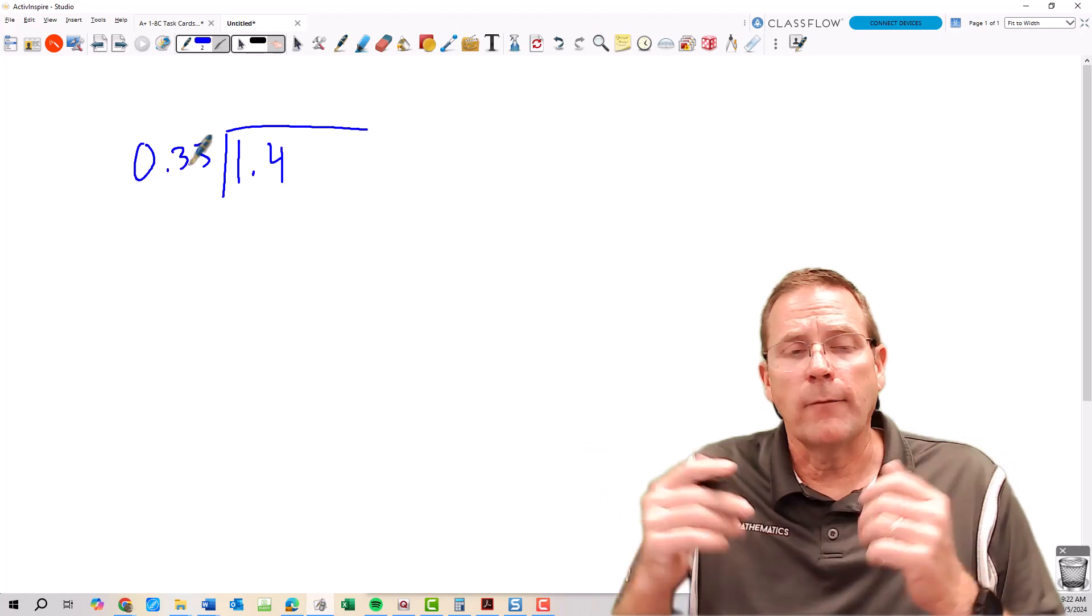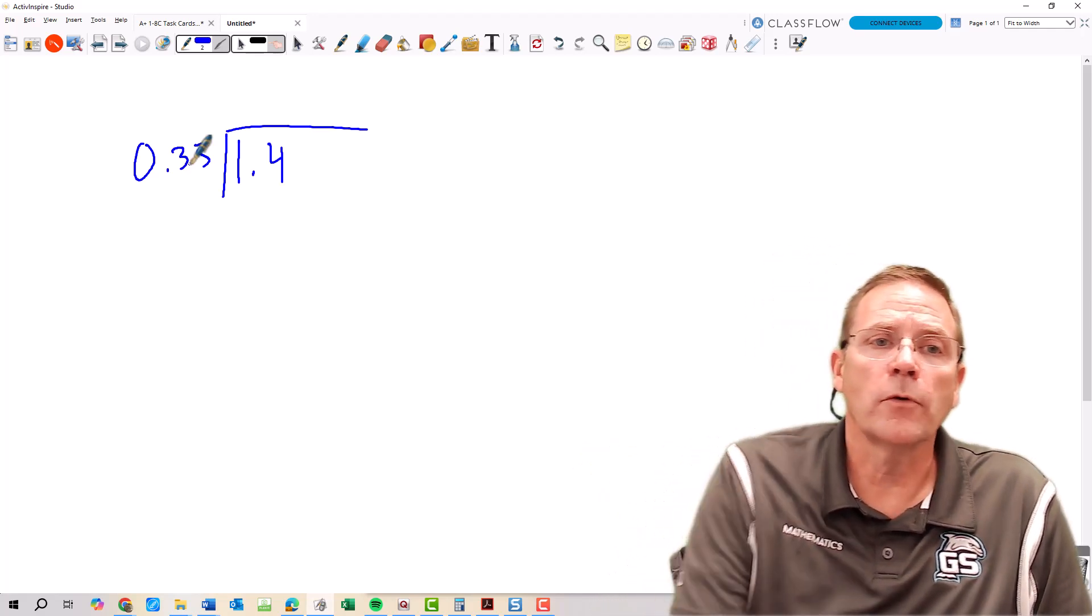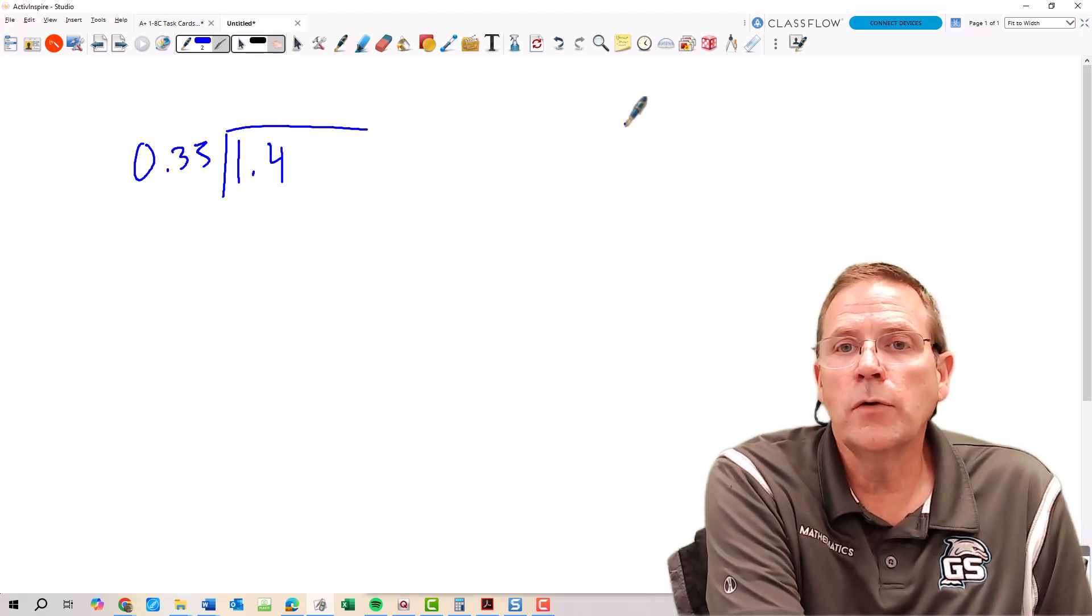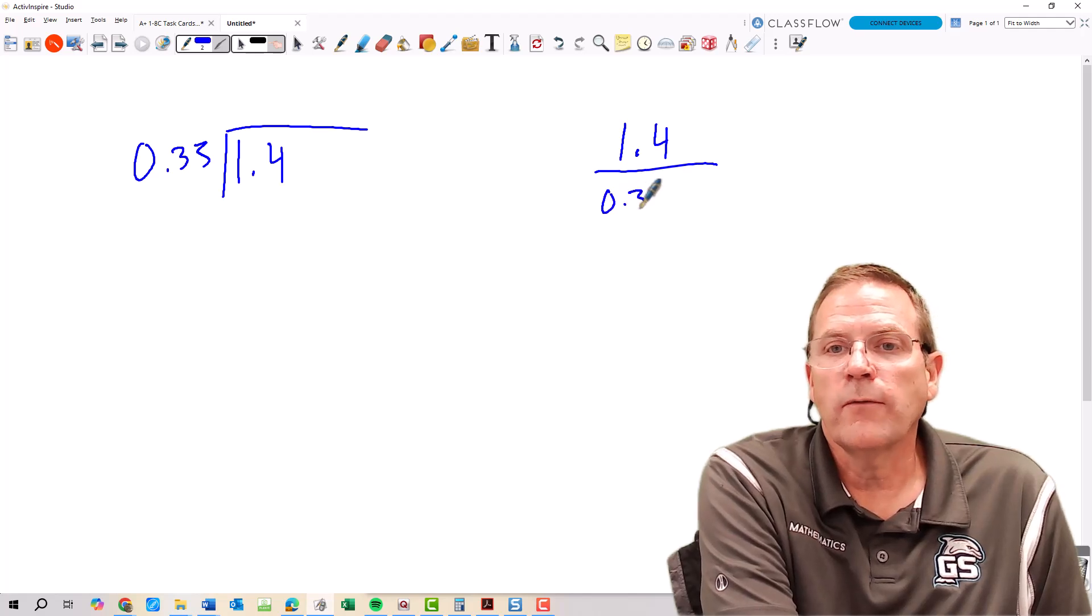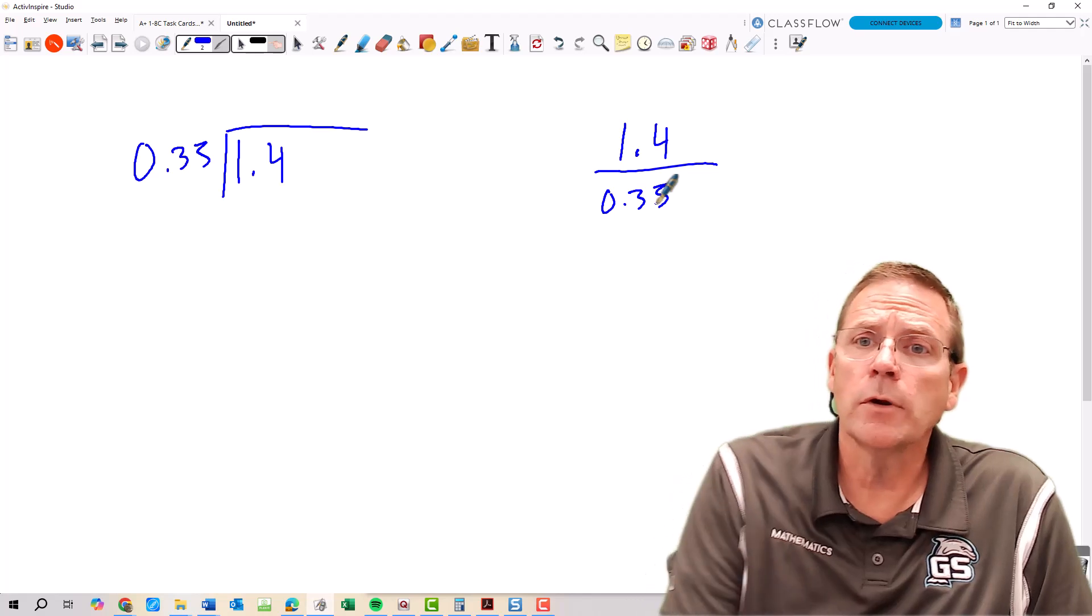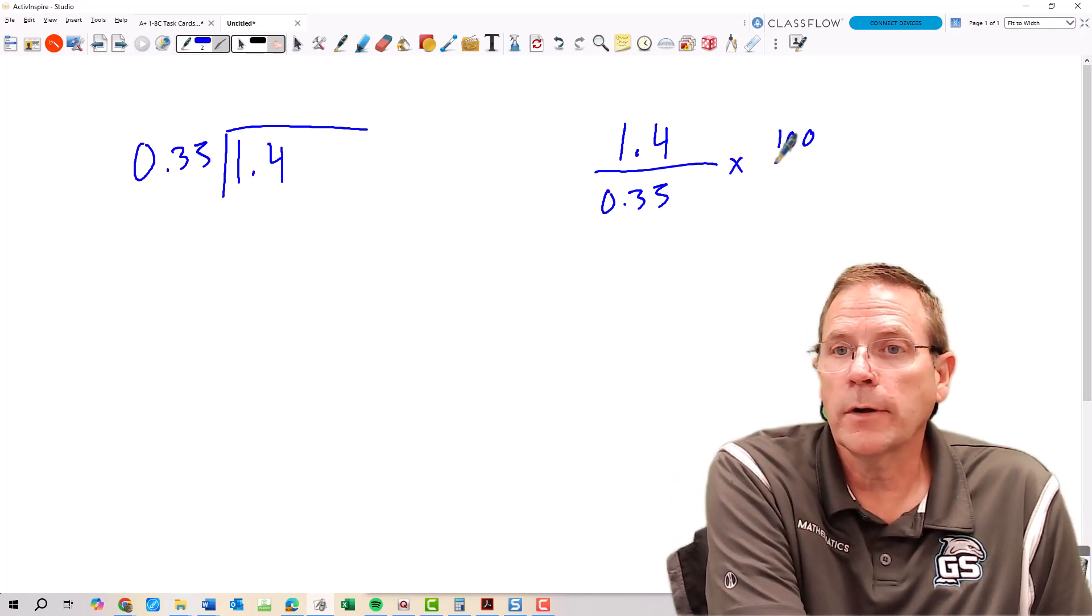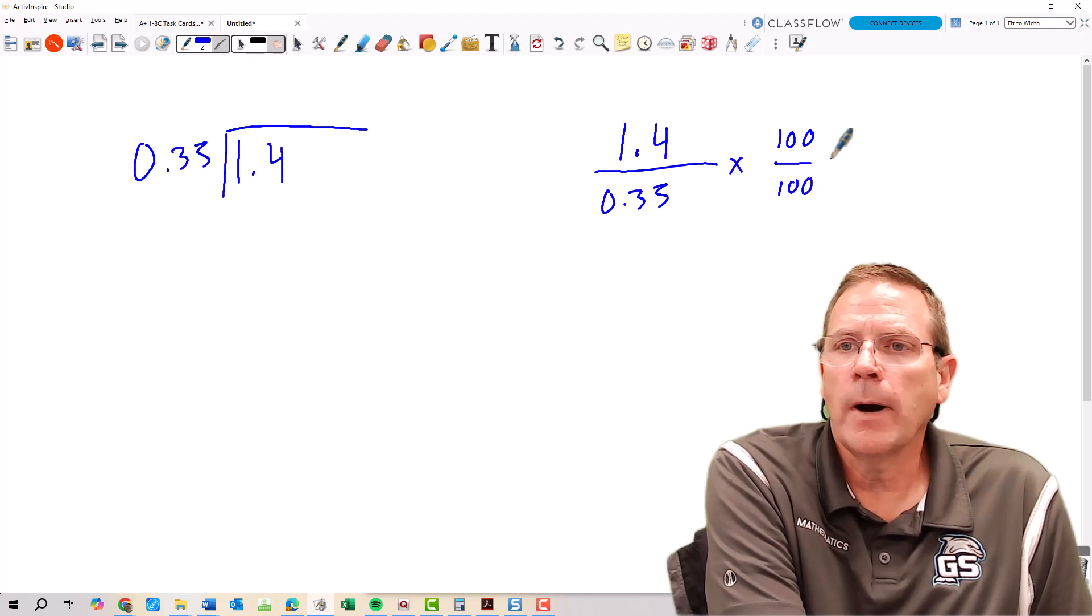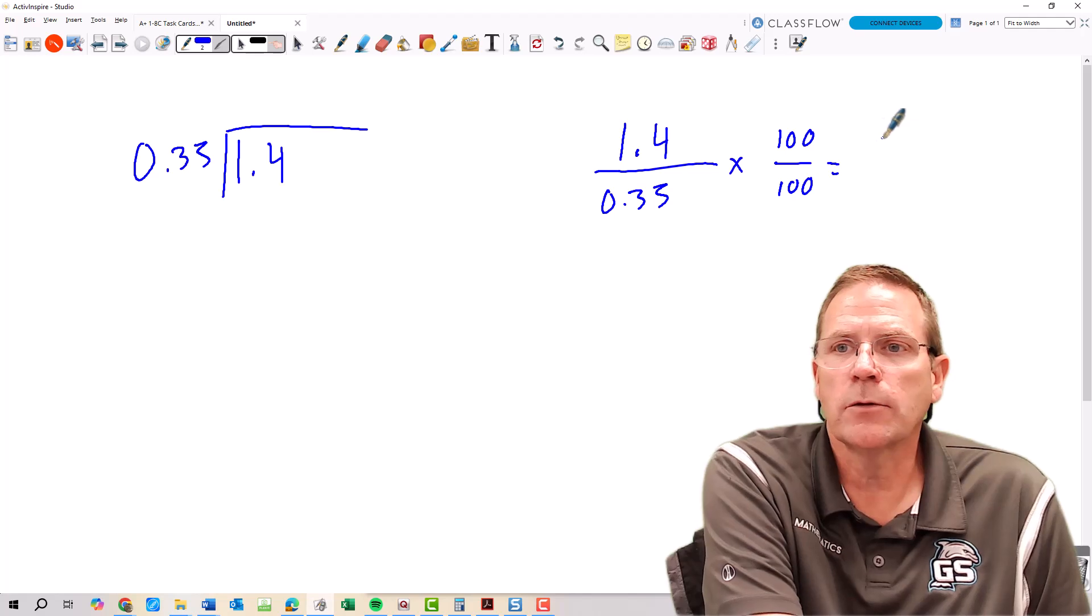But we're not doing these as decimals, we're working them as whole numbers. So what they have taught us to do is to take your 1 and 4 tenths and your 35 hundredths. Your largest decimal place is one hundredths, so we're going to take and multiply by 100 on the top and 100 on the bottom, which is going to move the decimal in both parts two spaces to the right. So now I have 140 divided by 35.